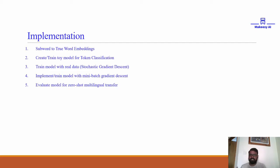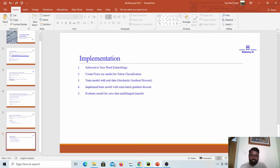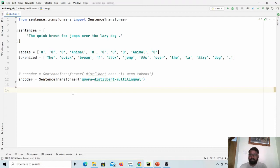The implementation will be divided into five sections: first, converting subword embeddings to true word embeddings; second, creating a toy model for token classification; third, training the model on real data using stochastic gradient descent; fourth, implementing batch gradient descent; and finally, evaluating the model for zero-shot multilingual transfer. In this video we will look at how to get token embeddings from sentence transformers, and in the next video we will start implementing the actual stuff. Let's go to the IDE and look at some examples.